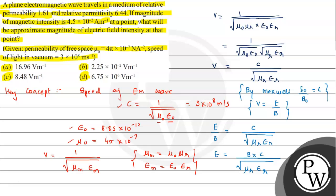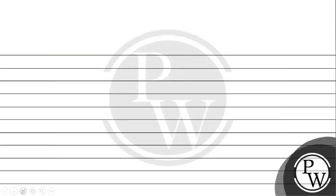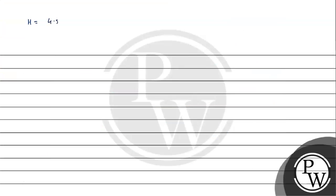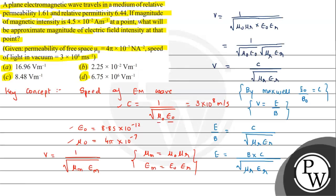Now we need to be careful that the value given is magnetic intensity H, not B. So magnetic intensity H is given as 4.5 × 10⁻² ampere per meter.